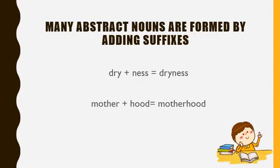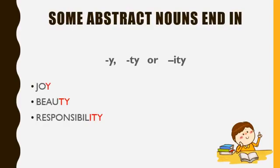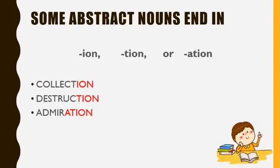Let's take another example: mother and -hood, where -hood is a suffix. When we combine these together, we have motherhood, which is an abstract noun. There are also abstract nouns that end in -ty or -ity, such as joy, beauty, and responsibility. And some abstract nouns end in -ion, -tion, or -ation, such as collection, destruction, and admiration.